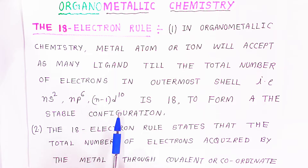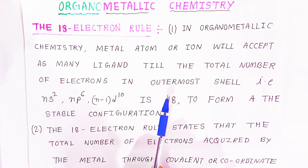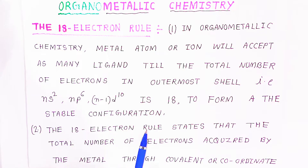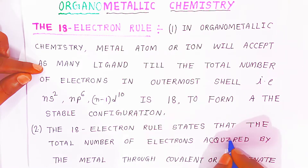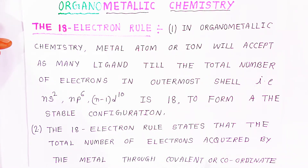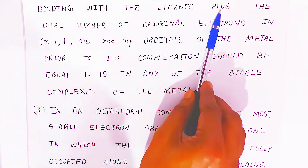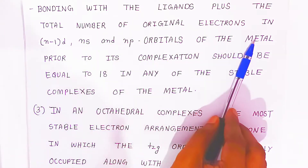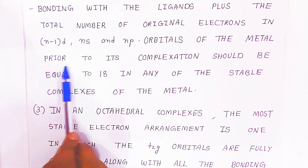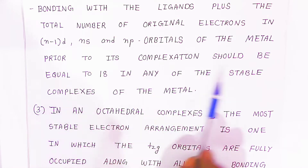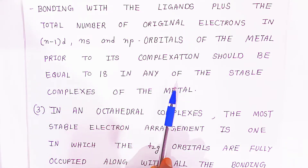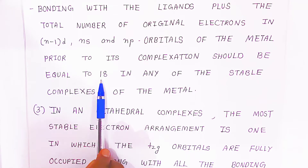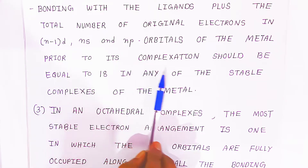If the configuration is stable, then the organometallic compound will be stable. The 18 electron rule states that the total number of electrons acquired by the metal through covalent or coordinate bonding with the ligands, plus the total number of original electrons in the (n-1)d, ns, and np orbitals of the metal, should be equal to 18 in any stable complex of the metal.